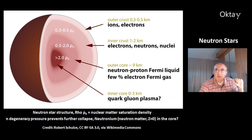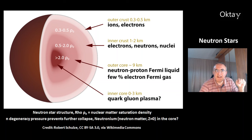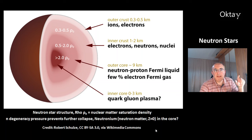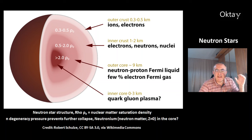This is the structure of a neutron star. You can see the outer crust is made of ions and electrons. This is rho zero — the nuclear matter saturation density. The inner crust consists of electrons, neutrons, and nuclei. There is an outer core of neutron-proton Fermi liquid. The inner core could be a quark-gluon plasma, or it could be made of neutronium — that is neutron matter, with atomic number zero because it contains no protons. The neutron star is stabilized by neutron degeneracy pressure, which prevents further collapse.